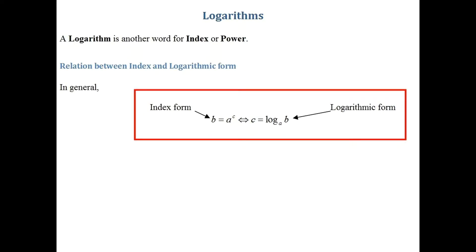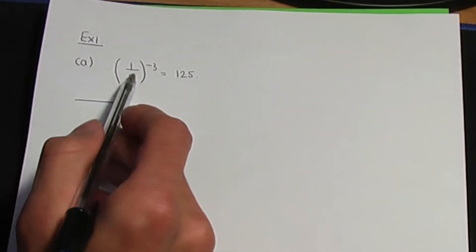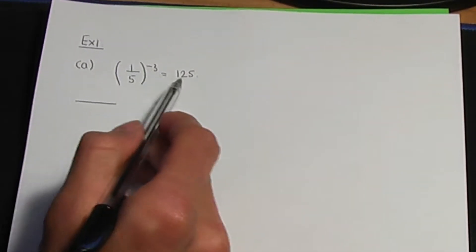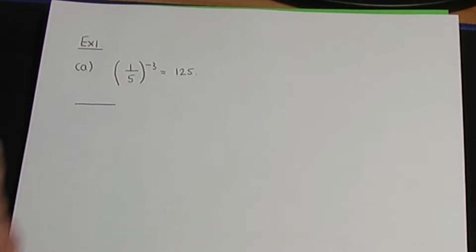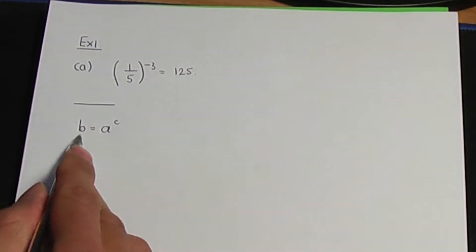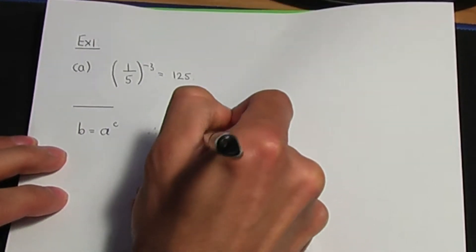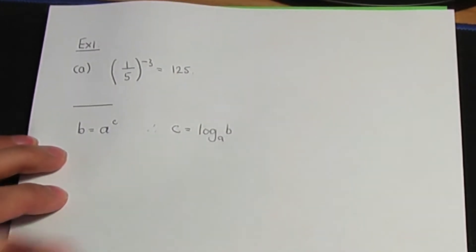Let me show you how this relation works with example number one. In part a, we need to express in logarithmic form: one over five to the power of minus three, and that is equal to 125. Back to the paper and pen. Here is example one part a: (1/5) to the power minus three is equal to 125. Let me write down the relation again: b equals a to the c. This equation is in index form. We could rewrite this in logarithmic form as c is equal to log of b to the base of a.